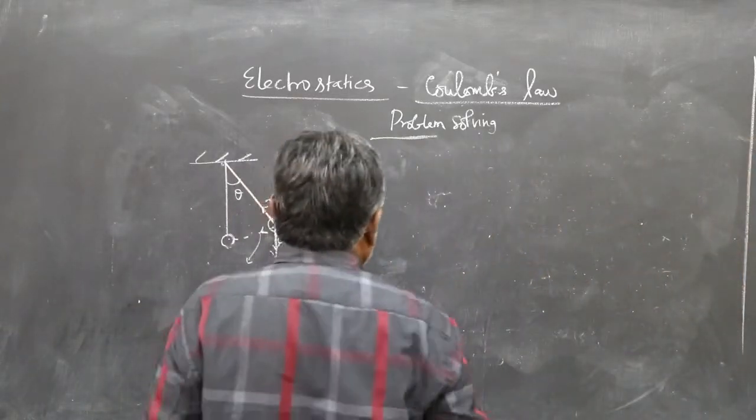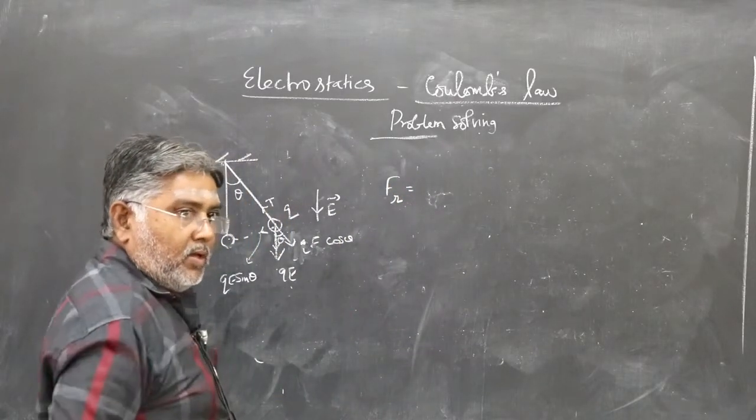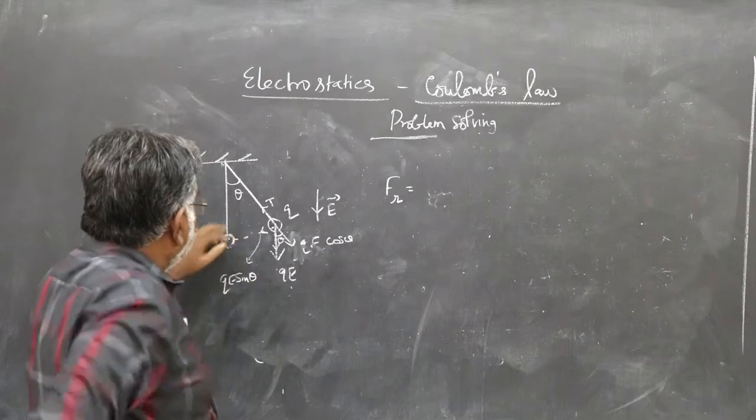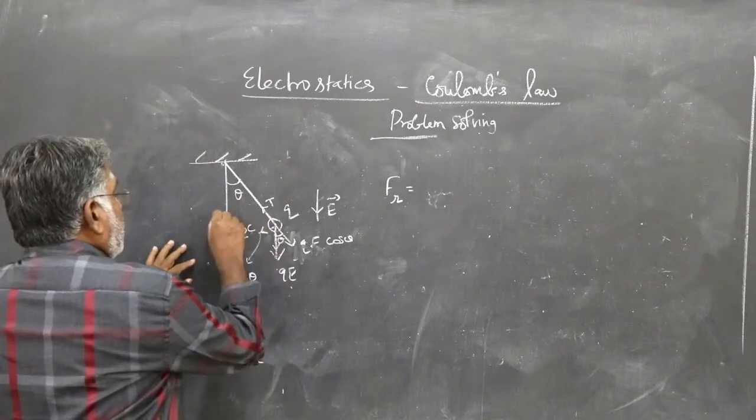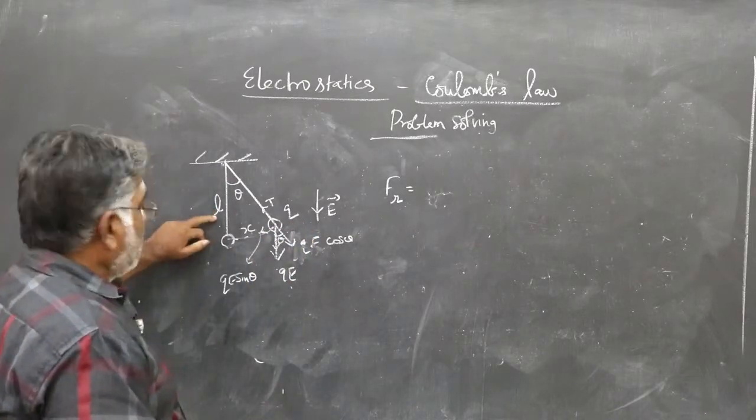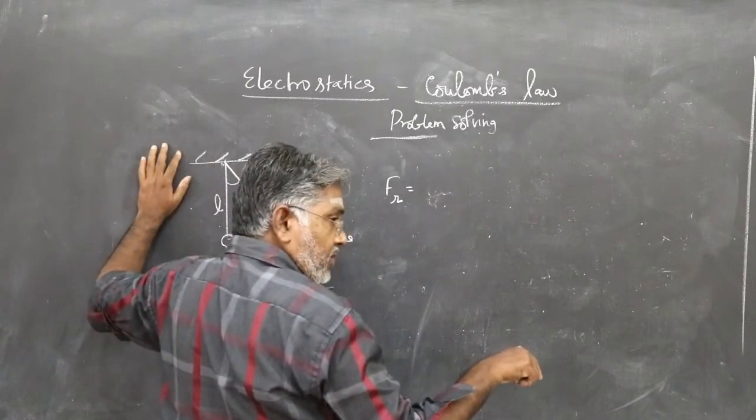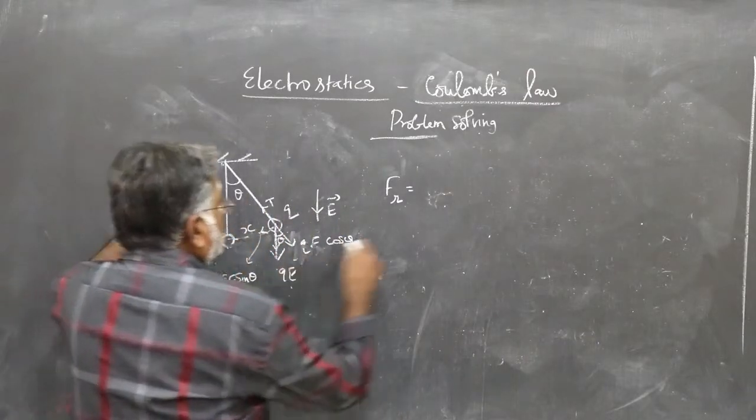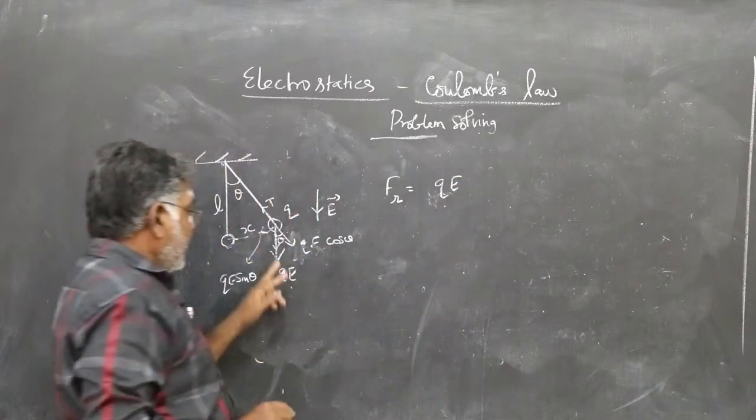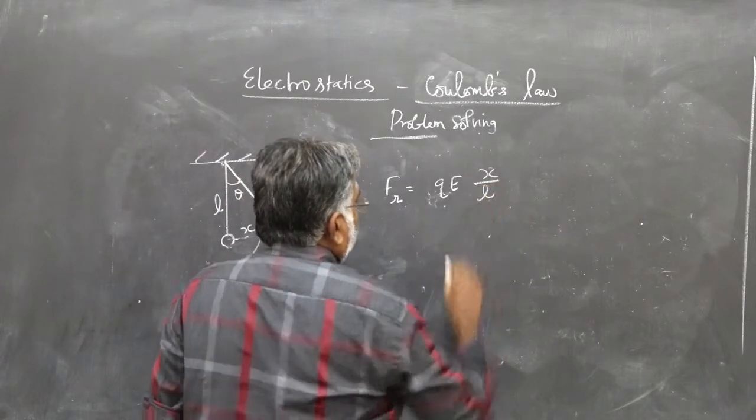Therefore, the restoring force numerically is FR equals QE sin theta. But sin theta can be taken to be x by L, if you consider this displacement to be x and this is L. Note that theta is very small. Therefore, sin theta can be written as theta, which will be x by L. So, the restoring force is QE sin theta equals QE times x by L, where L is the length of the pendulum. This is numerically the restoring force.